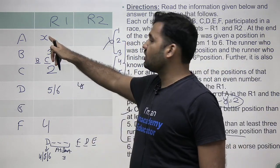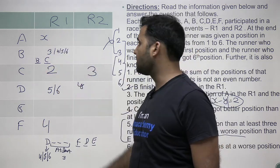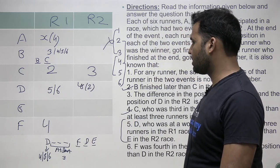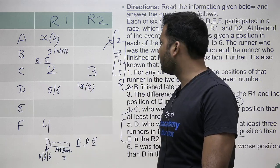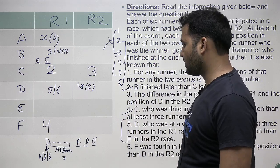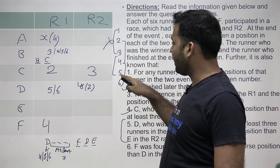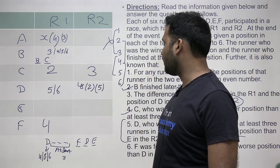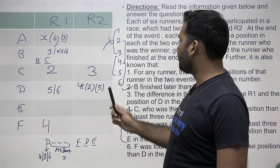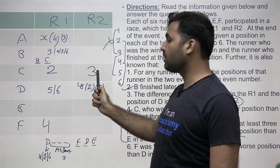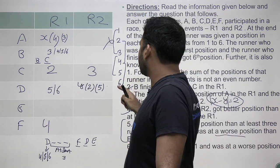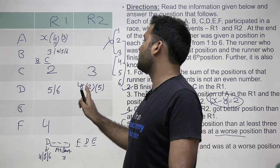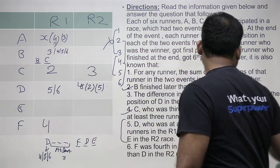Next, testing (2,4): A=2 in R1 is not possible because 2 is already used by C. What if A=4 in R1 and D=2 in R2? That keeps the difference of 2, so let's hold this case. Testing (4,6): 4 in R1 is already used by F, so this case is eliminated. And for (6,4): 6 is not yet used, so this remains a possible option.